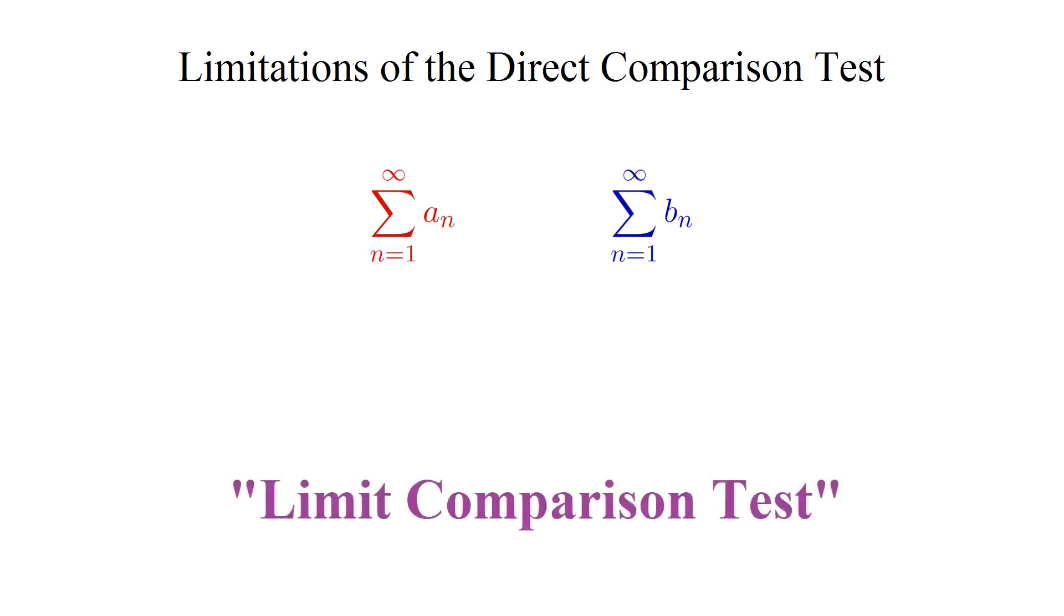It's called the limit comparison test, and it allows us to compare the convergence status of two series without worrying about the relative sizes of the respective terms of either series. The main requirement is that both series need to look sufficiently similar, in a sense I'll define in just a second.